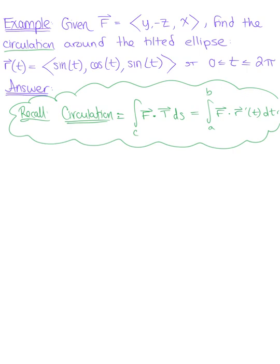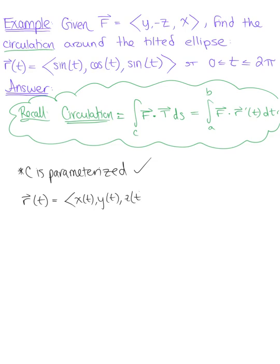We luck out here — we're given the parameterization for C. So what is given to us is our parameterization of the tilted ellipse: x of t, y of t, z of t defined by the components sine of t, cosine of t, sine of t, for the closed integral from 0 to 2 pi.